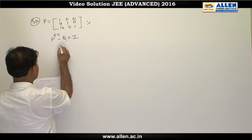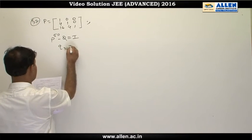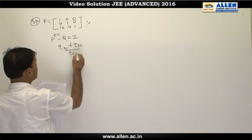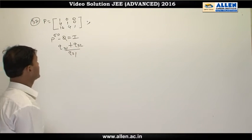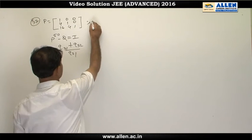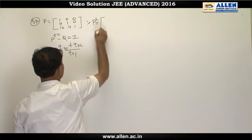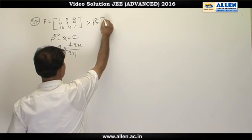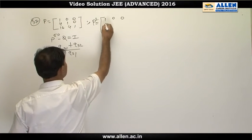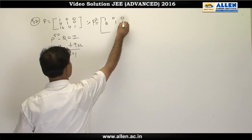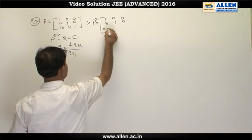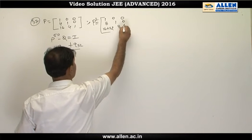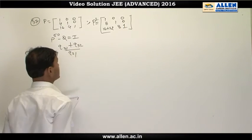We have to find the value of (Q31 + Q32) / Q21. From the given matrix P, if we find P squared, the elements will be 1, 0, 0; 8, 1, 0; and the third row elements are 16 + 32, 8, 1.